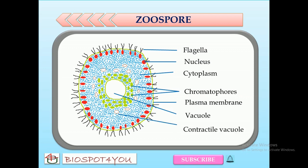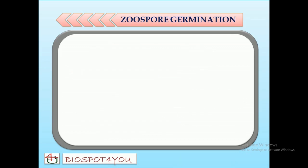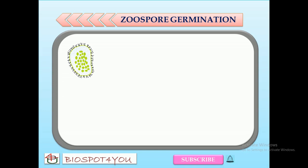The zoospores of Vaucheria are commonly called syn-zoospores or compound zoospores due to their multinucleate and multiflagellate condition. It is supposed that this type of zoospore is formed due to failure of division of the zoosporangium protoplasm into uninucleate and biflagellate zoospores. Just after liberation, the multiflagellate zoospore shows a sluggish movement for about 5 to 15 minutes. After that, they come to rest, lose their flagella, and become rounded.